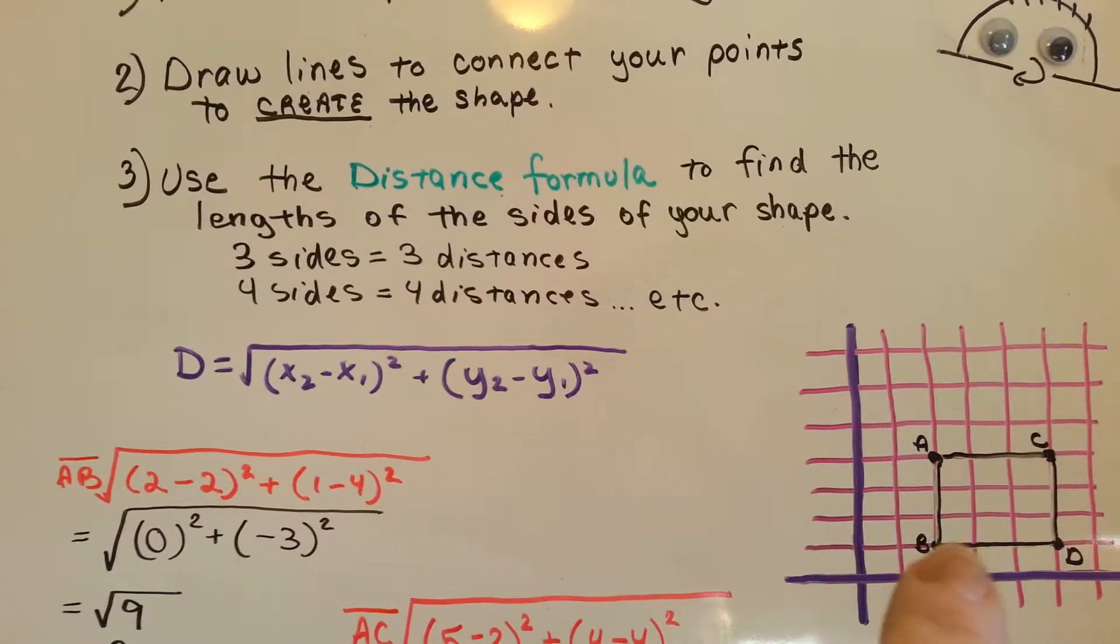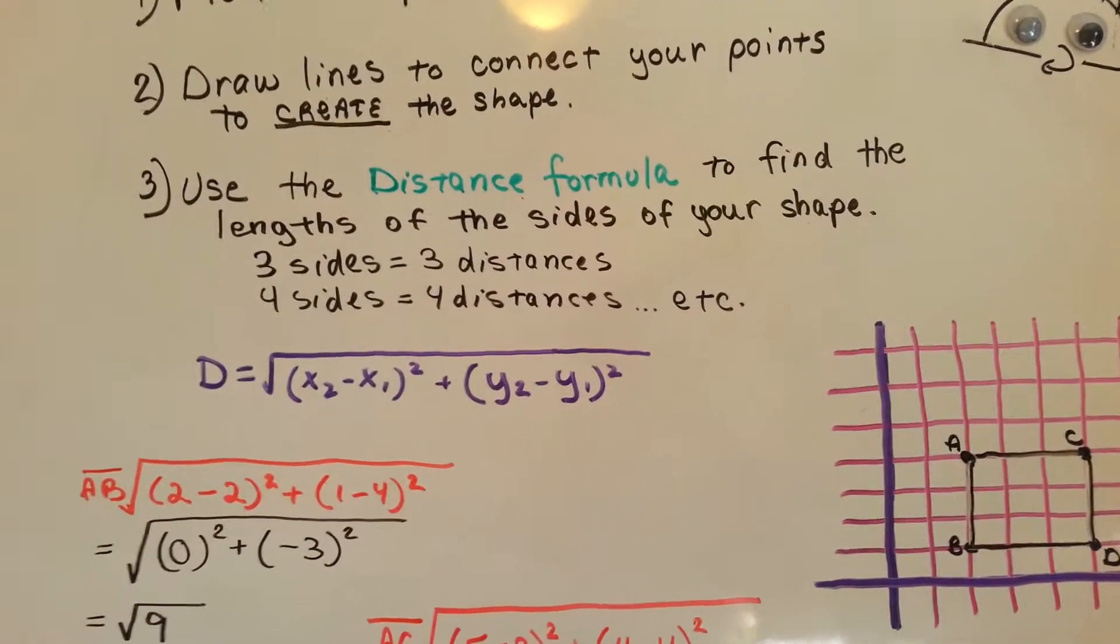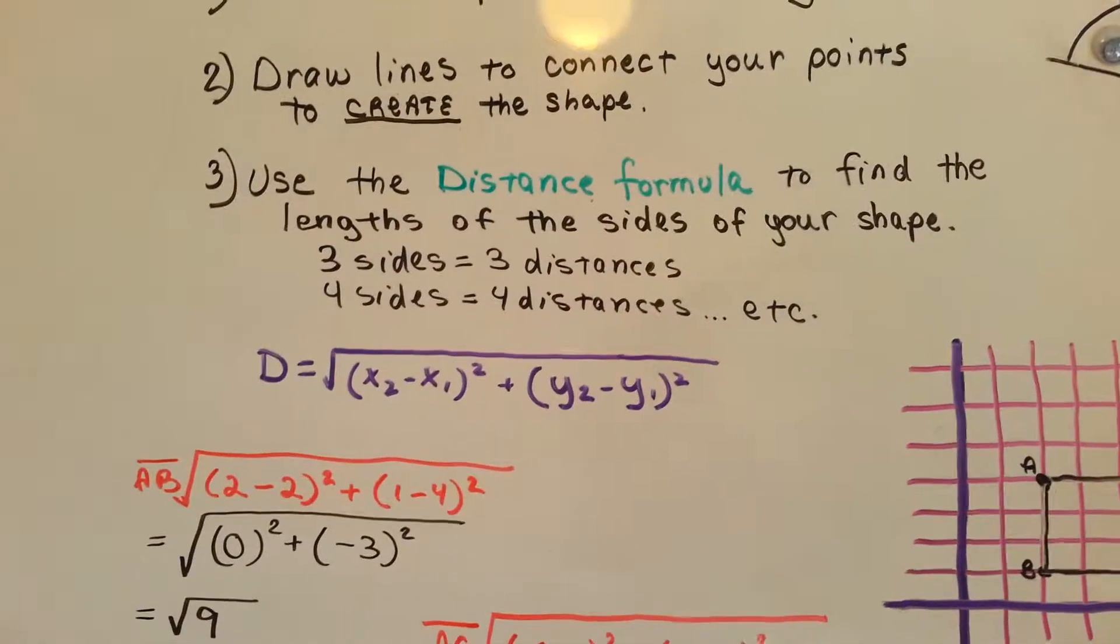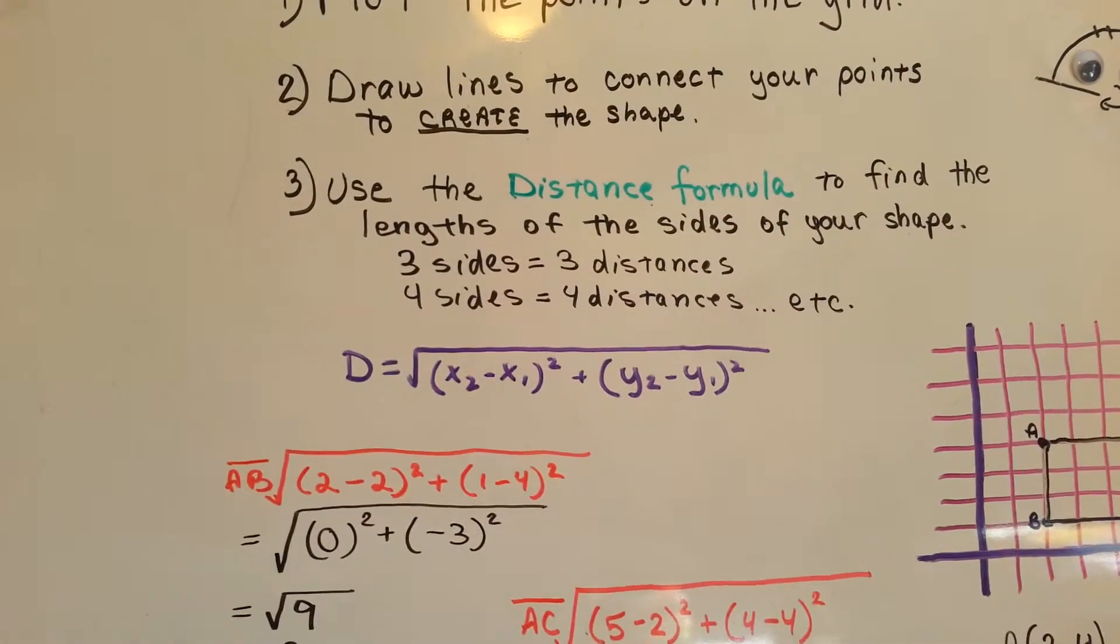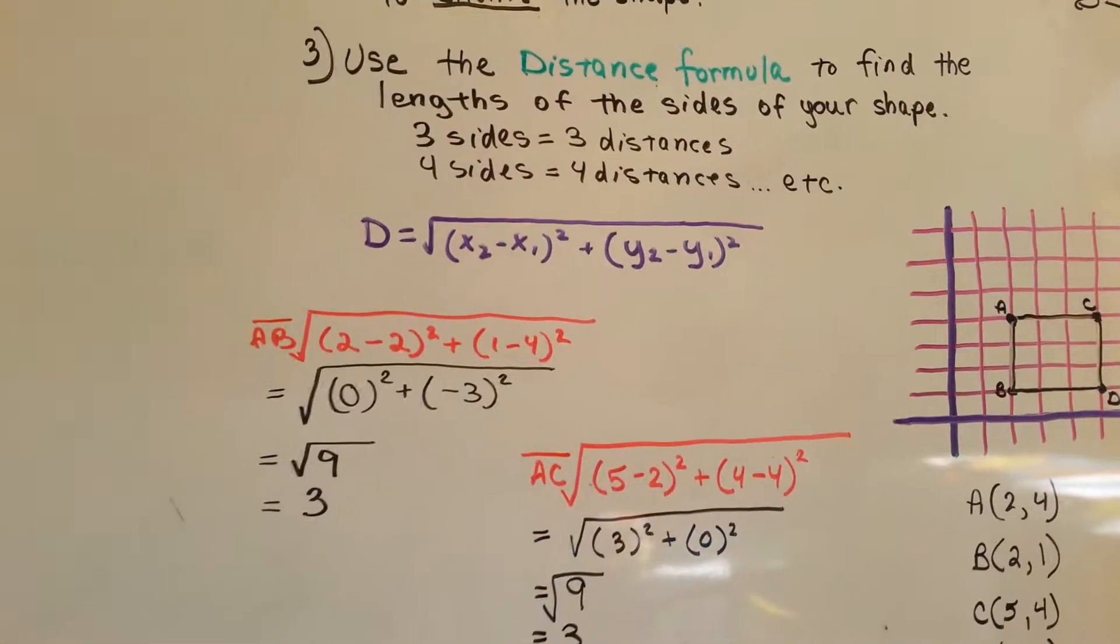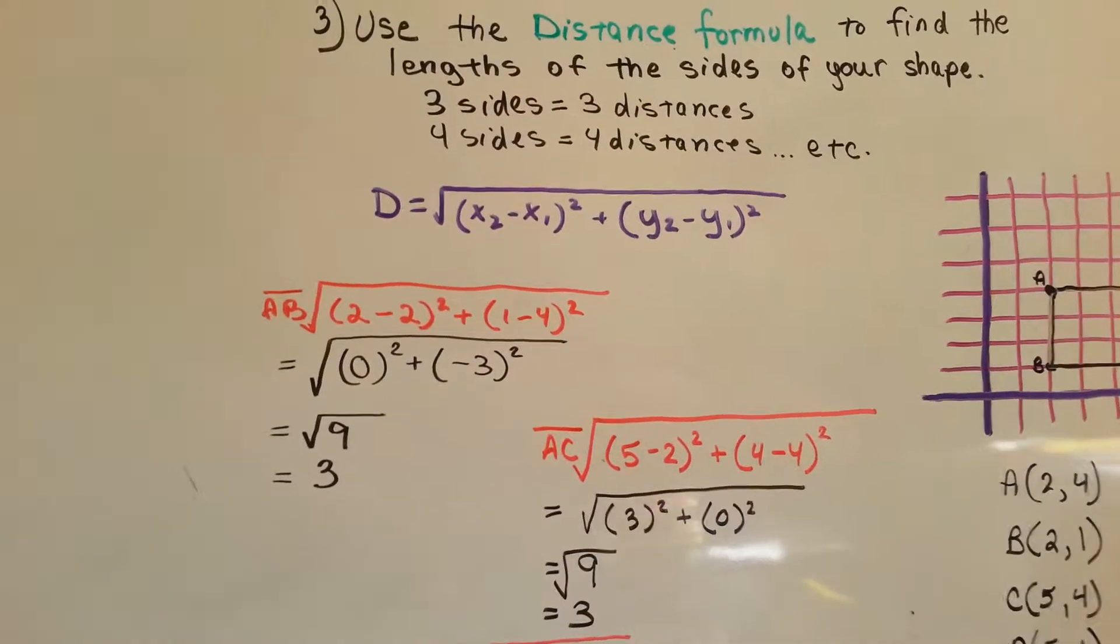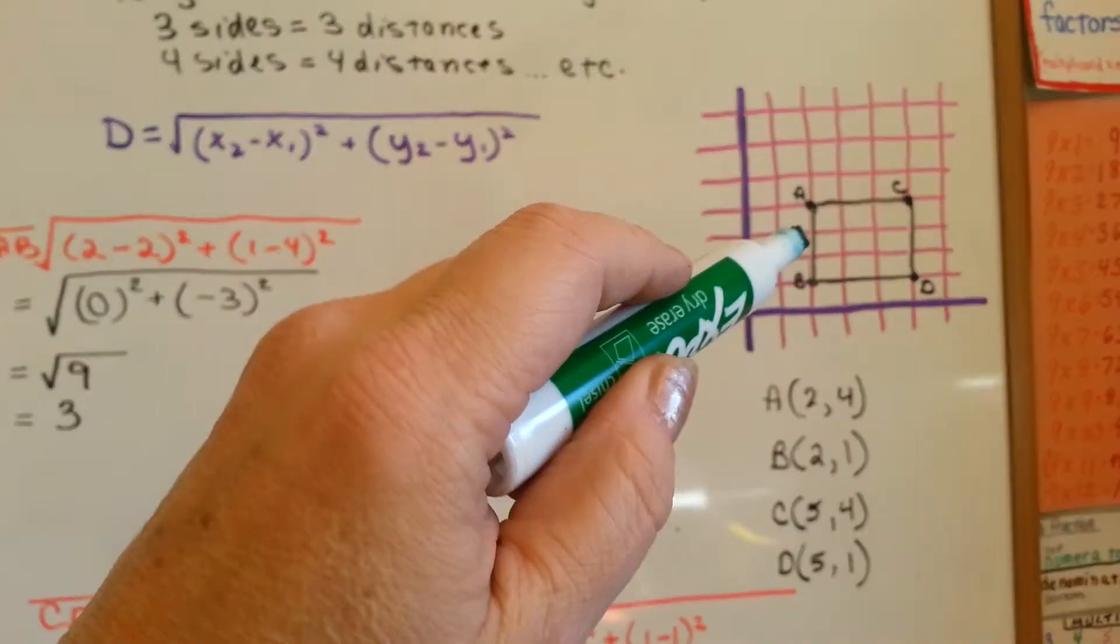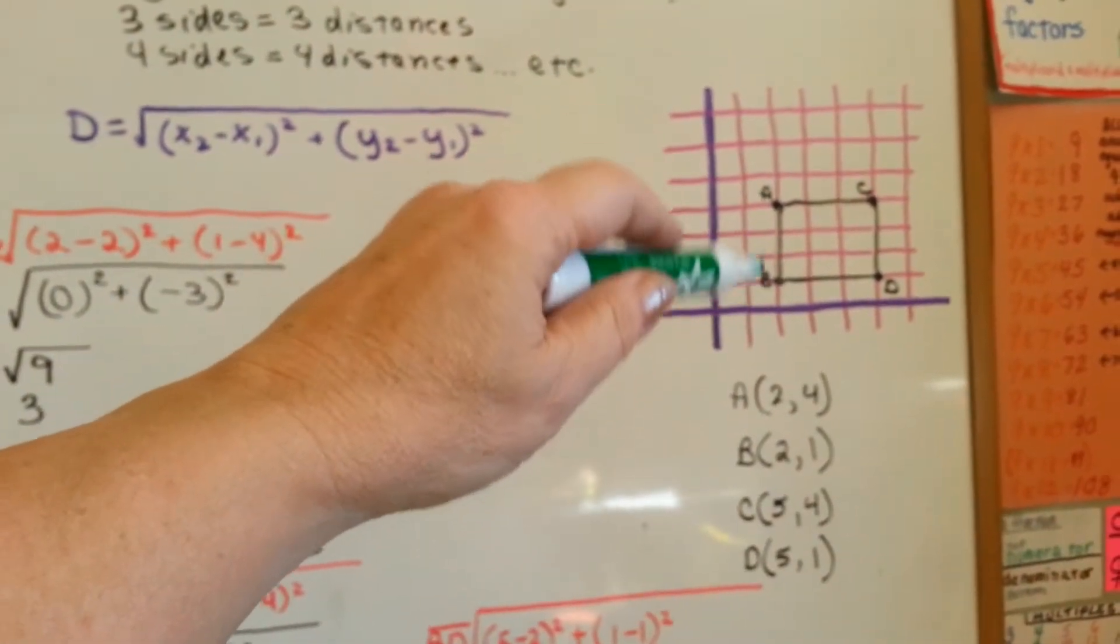So, in my case here, we had four sides, so I needed to find four distances. This is where the hard work comes in. We have to do the distance formula four times. Luckily, I chose some easy ordered pairs to work with. So, here's the first one. We're going to do the line AB right here.